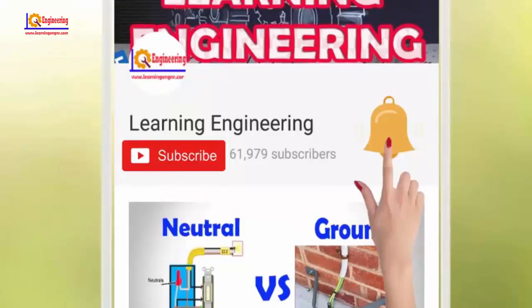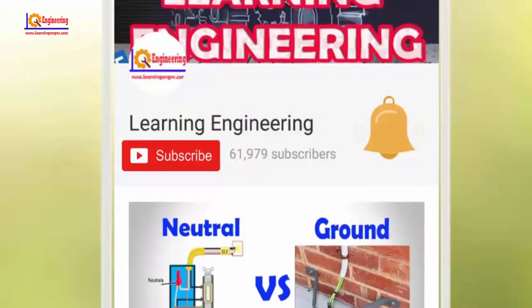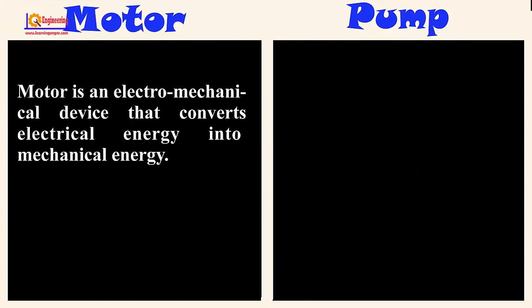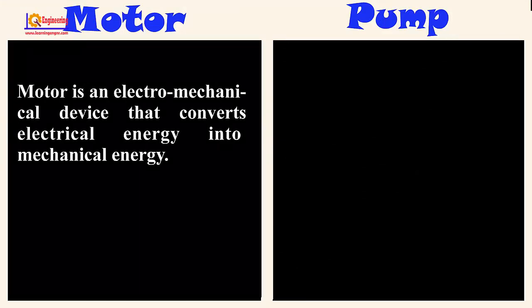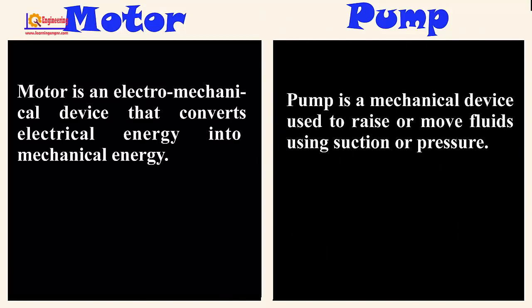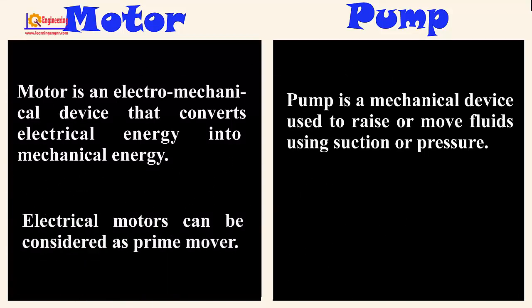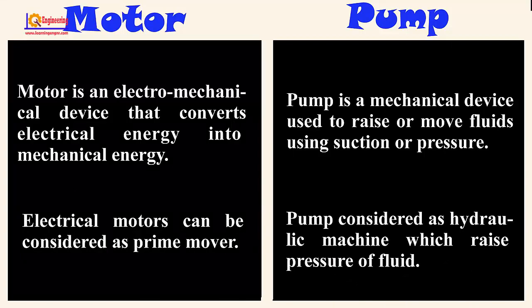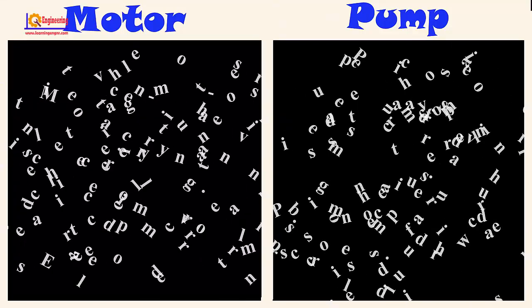A motor is an electromechanical device that converts electrical energy into mechanical energy. Whereas a pump is a mechanical device used to raise or move fluids using suction or pressure. Electrical motors can be considered as prime movers, whereas pumps are considered as hydraulic machines which raise the pressure of fluid.